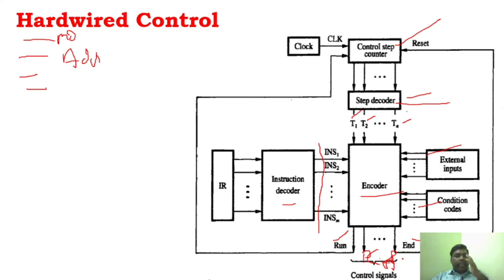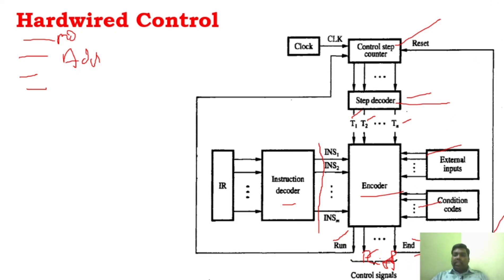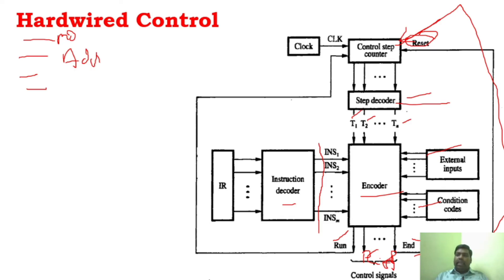You should also understand the other control signals. There is the N signal — the end control signal — which is used when an END instruction is reached. What it will do is reset the counter. As you can see, it is connected to the counter, and the counter will be reset. It will reset the counter so that it will start fetching the next instruction. The END command indicates that a particular instruction is completed, resets the counter, and starts fetching the next instruction.